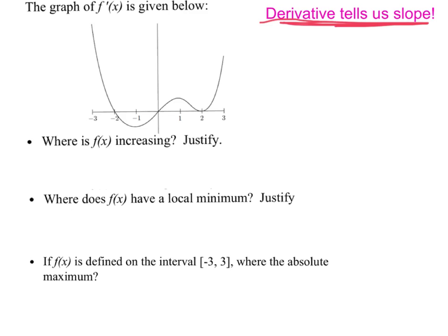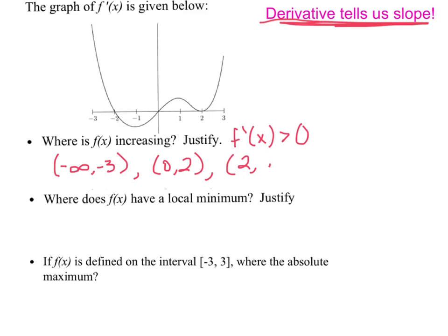Let's answer these questions. Where is f(x) increasing? I always like to think about the justification first. f is increasing when f prime of x is greater than zero. So, we're going from negative infinity to negative three, and from zero to two. Notice that at two, it is not increasing because f prime is zero at that spot.